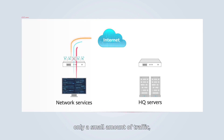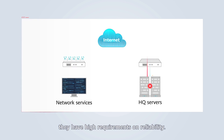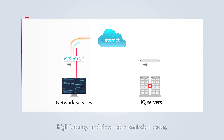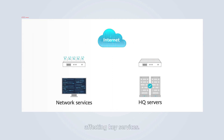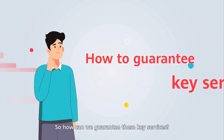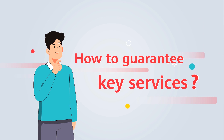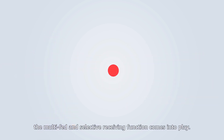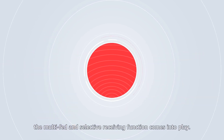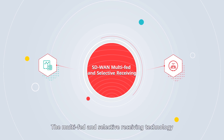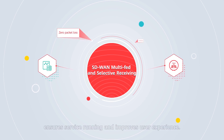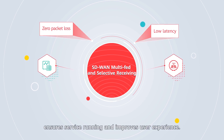Although these network services occupy only a small amount of traffic, they have high requirements on reliability. If packet loss occurs, high latency and data retransmission occur, affecting key services. So how can we guarantee these key services? This is where the modified and selective receiving function comes into play, ensuring service running and improving user experience.